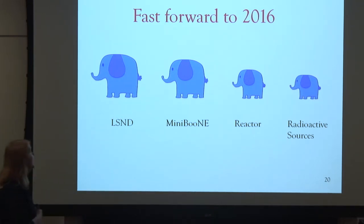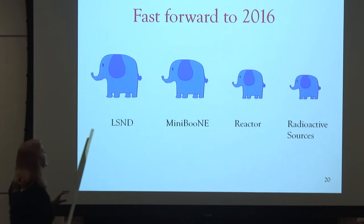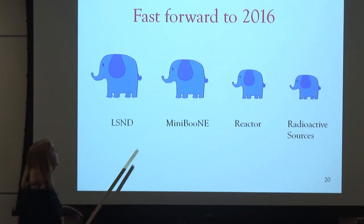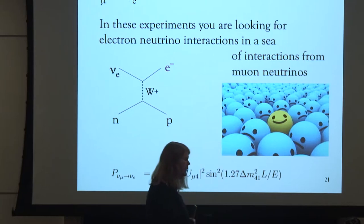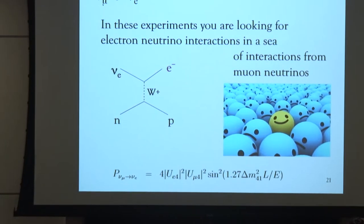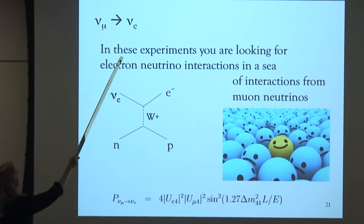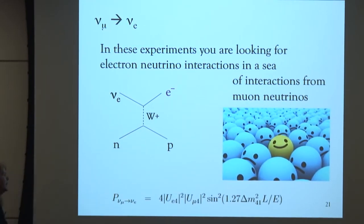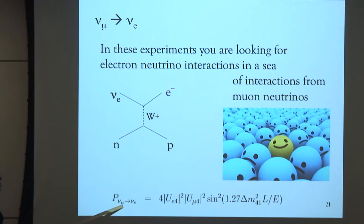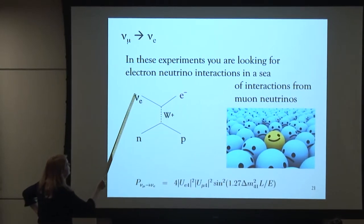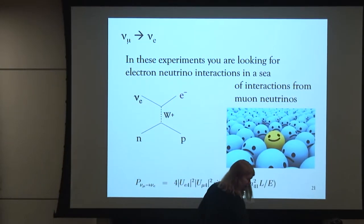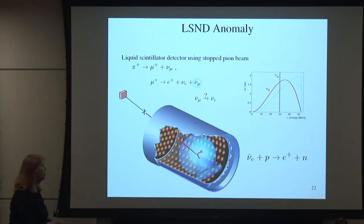Let's fast-forward to 2016. In 2016 we had essentially four types of anomalies sitting out there, and the order of size is the order of my elephants. For nu_mu to nu_e, the first signal seen at a pretty high level — well beyond two sigma — came in this particular mode. The oscillation involves either a charged-current nu_e interaction or an inverse beta decay interaction. The first experiment that started with this was using IBD — that was the LSND anomaly.